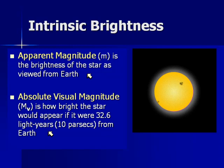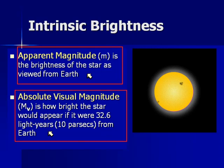Apparent magnitude is basically talking about how bright a star is in our nighttime sky. Absolute magnitude, or absolute visual magnitude, is a better way of comparing stars — how bright the star would appear if it were 32.6 light years away, or using the more popular unit of distance, how bright it would appear if it were 10 parsecs from Earth. A parsec is about 3.26 light years.